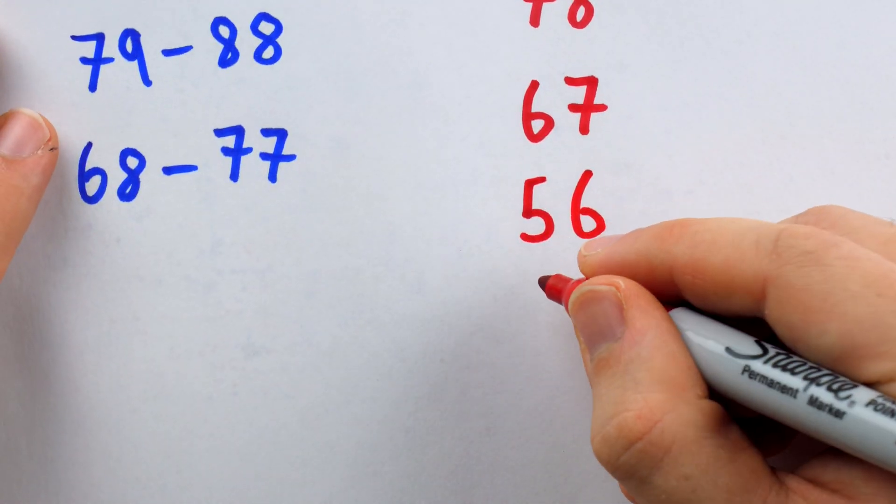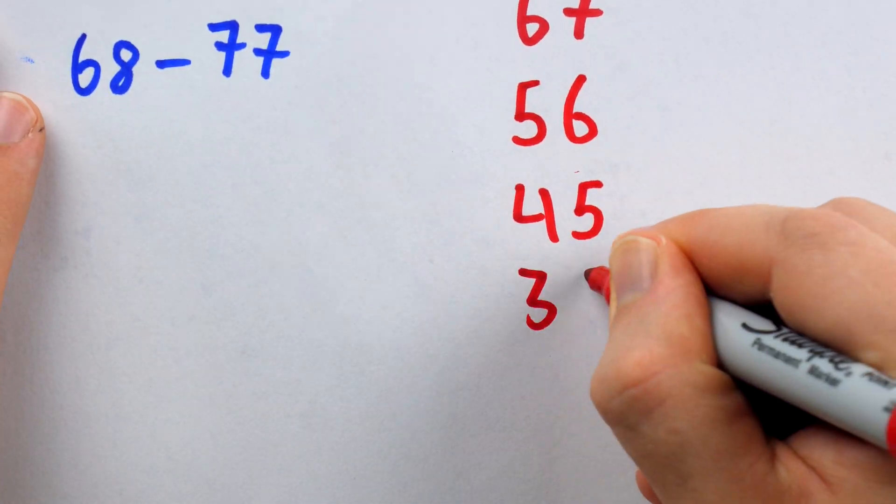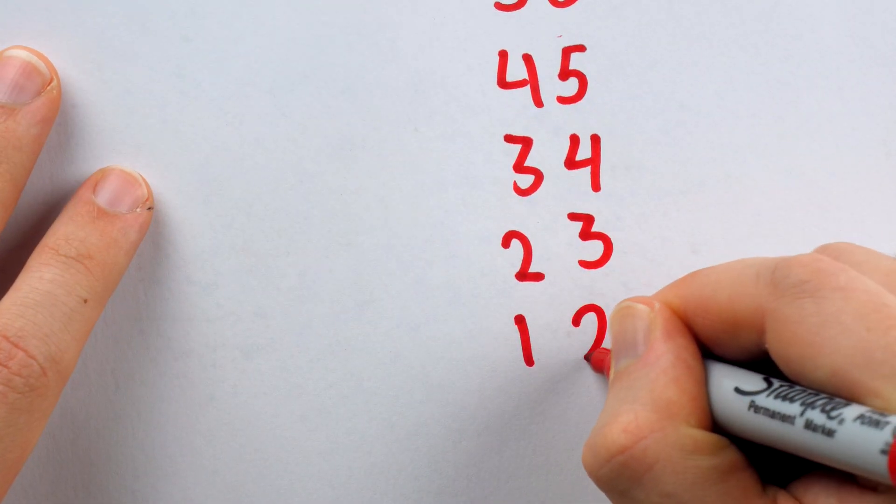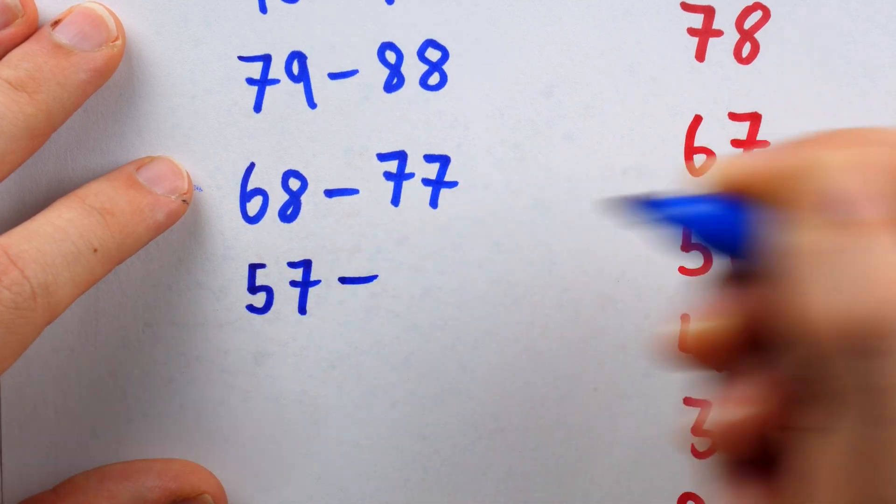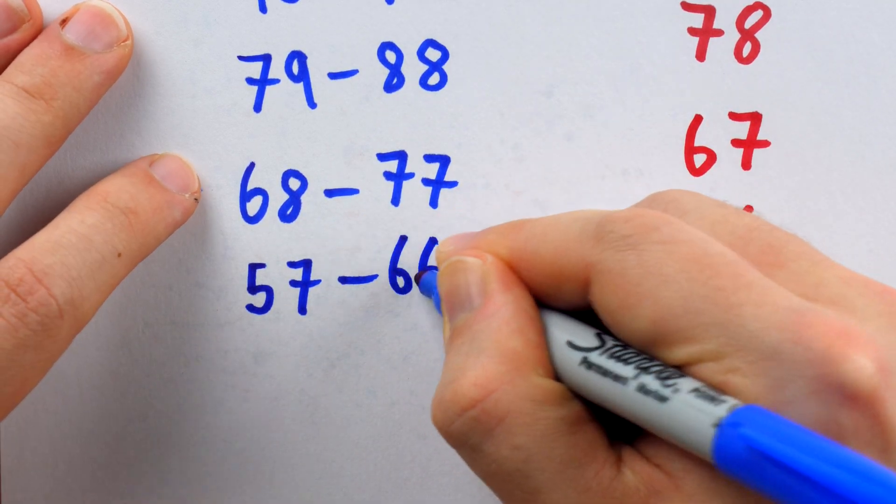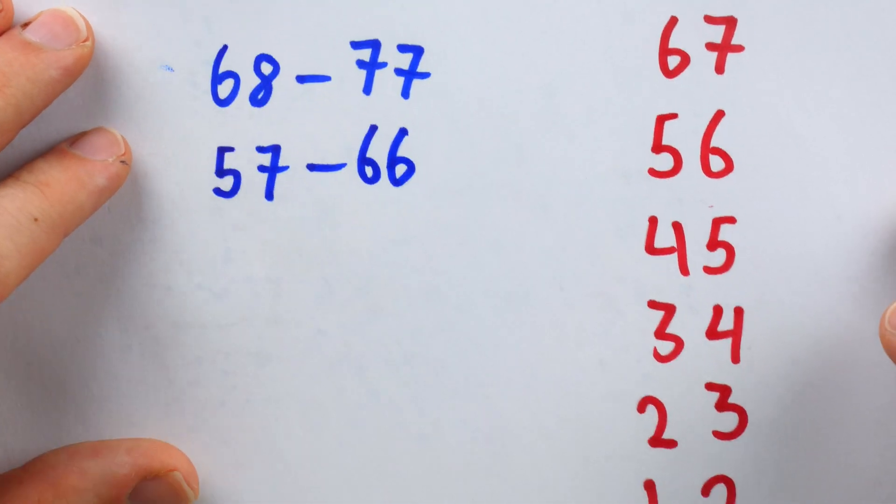And we'll just finish writing out the pattern here. 56 would also be a losing position, as would 45 and 34 and 23 and 12, and indeed 1. That would be a losing position. Similarly, the winning positions will be all the positions from which you can force your opponent to be in a losing position.